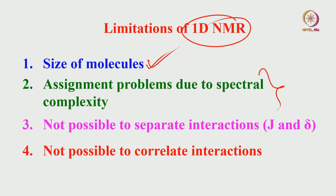The second limitation is the assignment problem due to spectral complexity. So far, we were analyzing the spectrum very easily — a CH3 proton, a CH2 proton: CH2 is a triplet because of CH3, CH3 is a triplet because of this. We could assign quartet and triplet patterns straightforwardly. This is possible only when the spectrum is not complex and is well-dispersed. If you go to a slightly bigger molecule with enormous overlap and spectral complexity, you cannot make assignments so easily. For example, I showed a case where one phosphorus with four different couplings gave 90 peaks — there could be enormous complexity.